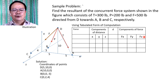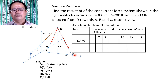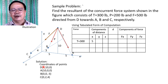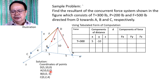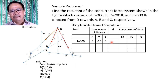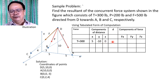Let's start with force T. Force T has a magnitude of 300 and is directed from D to A. The components of the distance from D to A are: x = 10 − 5 = 5, y = 0 − 10 = −10, and z = 0 − 0 = 0. From these components, we compute the distance d = √(x² + y² + z²) = √(5² + (−10)² + 0²), giving us d = 11.19.